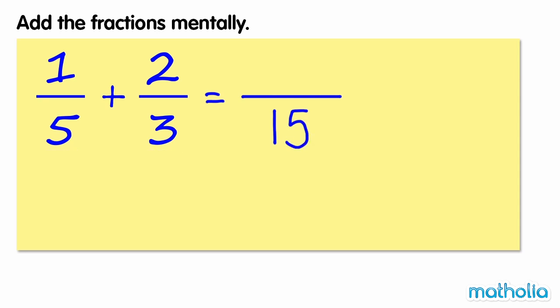Now multiply opposite numerators and denominators. 1 times 3 equals 3. 2 times 5 equals 10. 3 plus 10 equals 13.